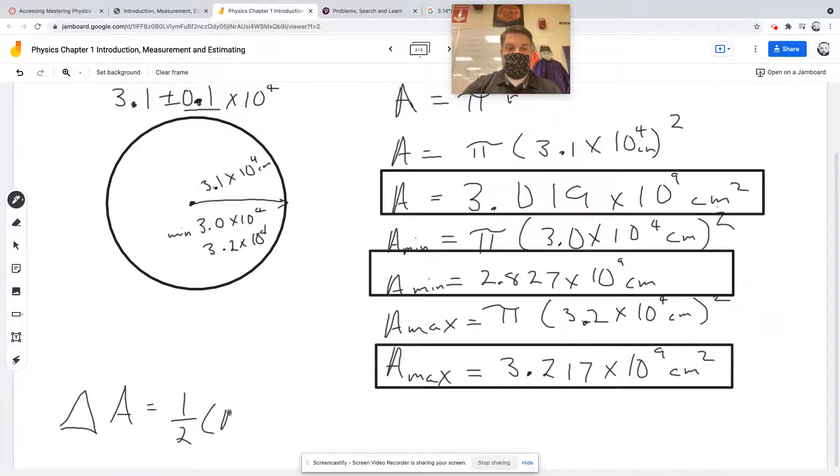times (A max minus A min), which gives us the uncertainty in the area based on the uncertainty of the radius.